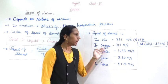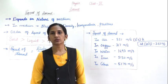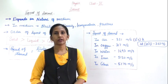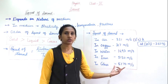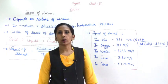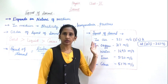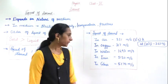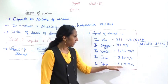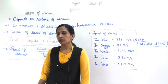The speed of sound in oxygen is 317 meters per second. In water it is 1493 meters per second. In iron it is 5130 meters per second. In glass it is 5170 meters per second. So iron and glass are solids, water is a liquid, and oxygen and air are gases — this matches the order we discussed.